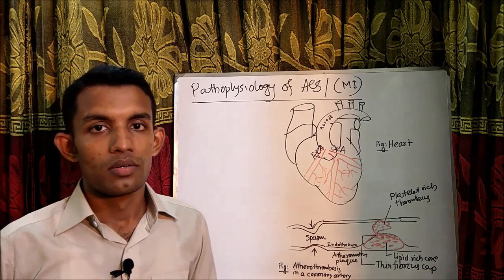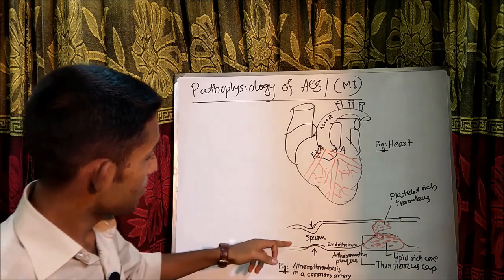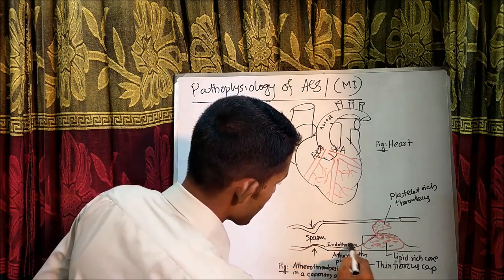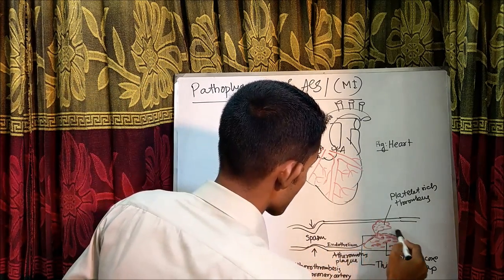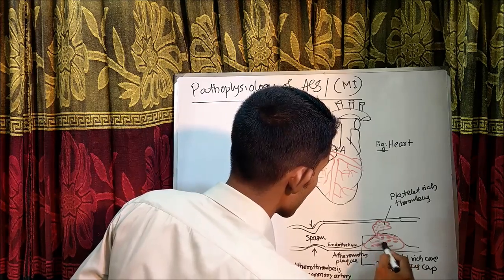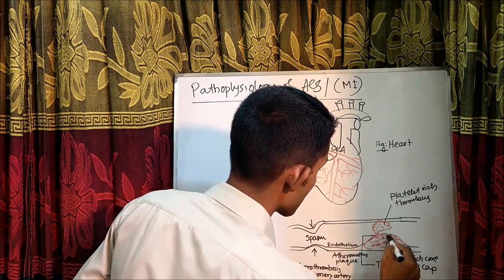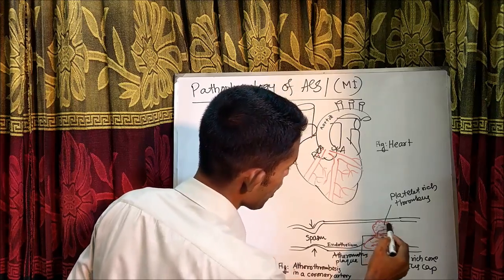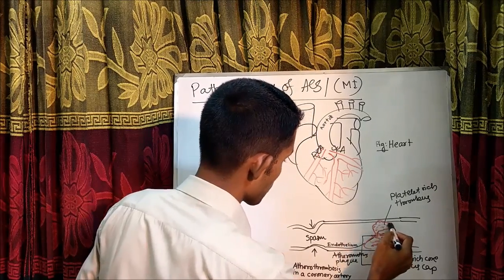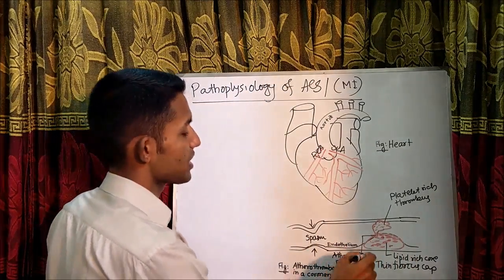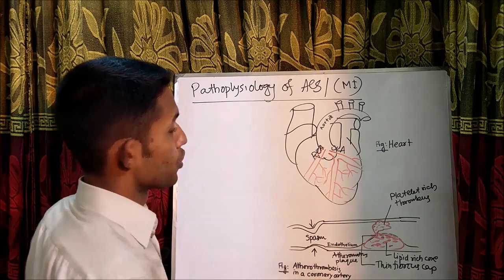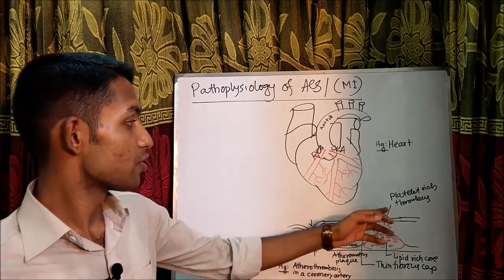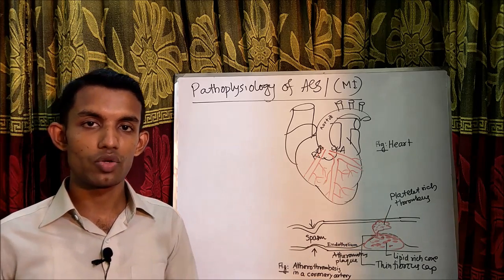This is a schematic diagram of the coronary artery. Here is the endothelium, and this is an atheromatous plaque having a lipid-rich core with a thin fibrous cap, which may rupture and cause platelet aggregation and adhesion, causing localized thrombus formation, vasoconstriction, or distal embolization.